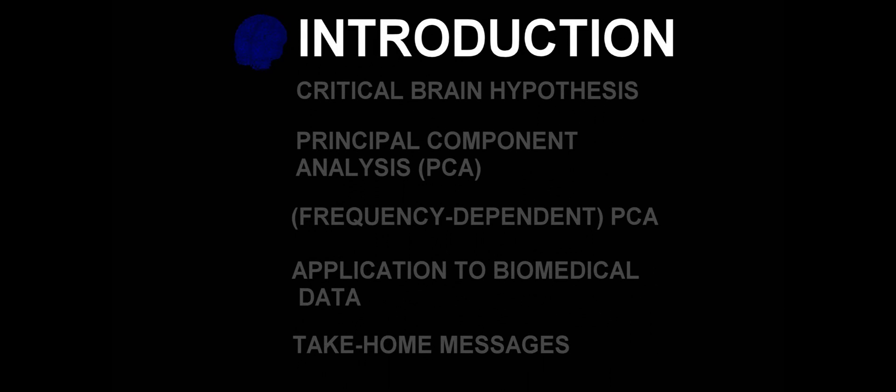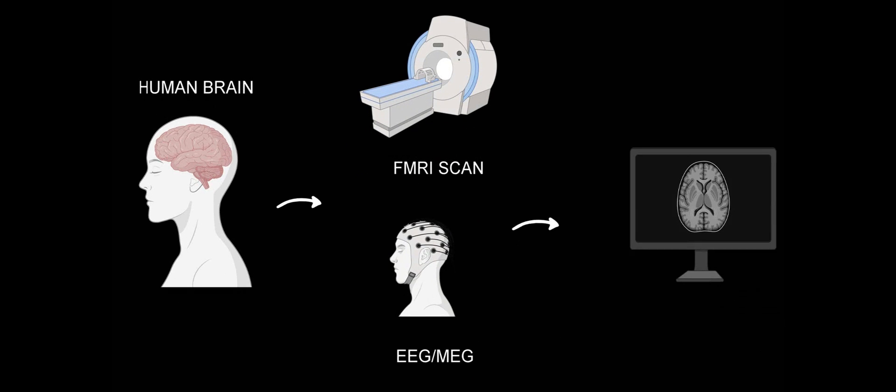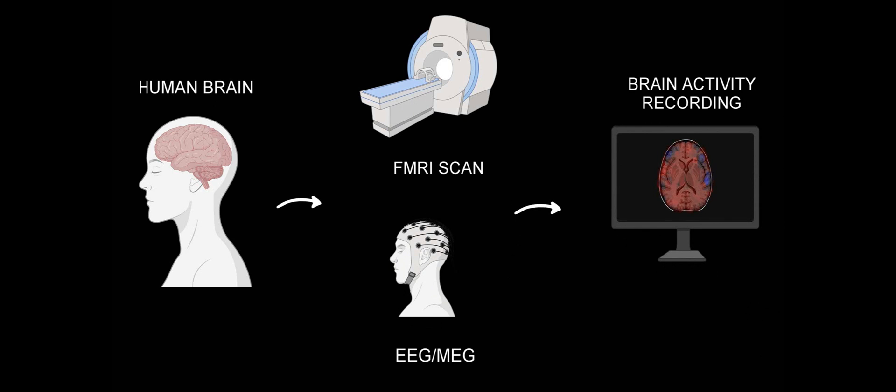Complex systems. Recent technological advances have enabled scientists to take a closer look into the human and animal brain. Non-invasive techniques such as fMRI, EEG, or MEG now provide us with very detailed information on brain dynamics with great spatial, in the case of fMRI, and temporal, in the case of EEG and MEG, resolution.